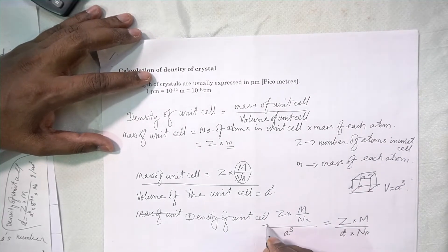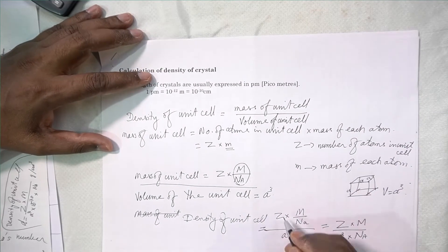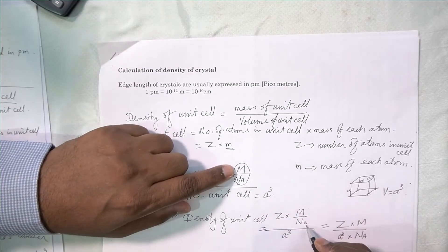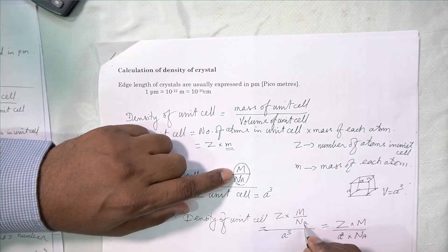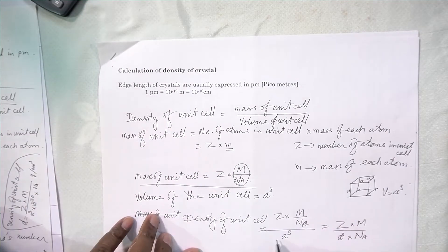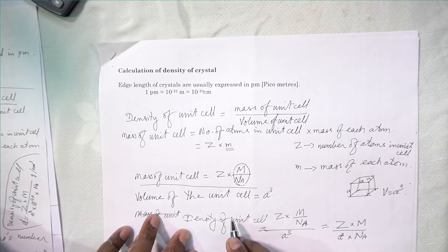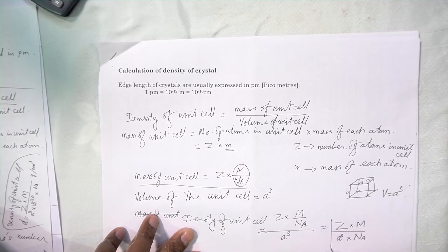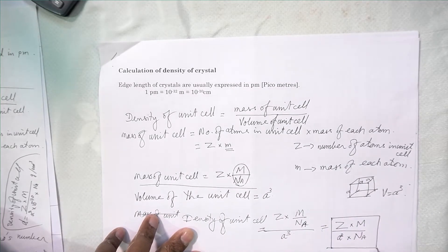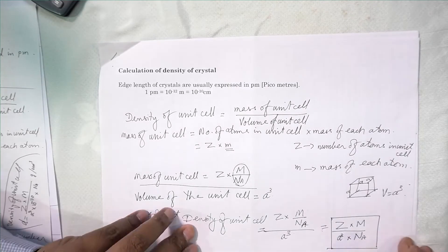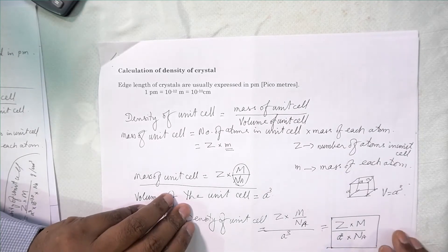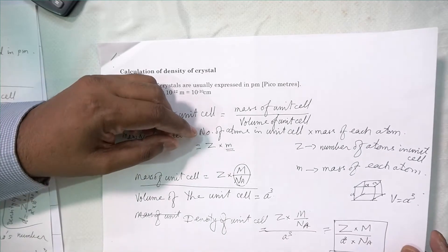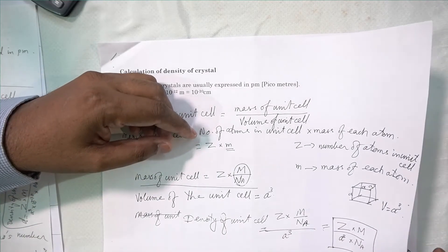Therefore, density of cell is equal to Z into M upon Na, that is Avogadro's number, divided by volume of the cubic cell A cubed. Simplified, we can write: Z into capital M divided by A cubed into Na. This is the formula we can use for calculation of density of a crystal.